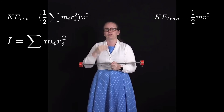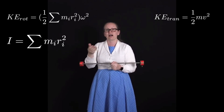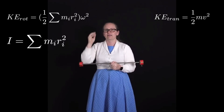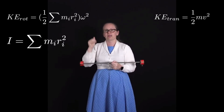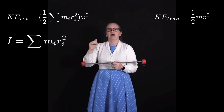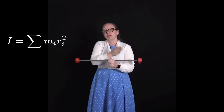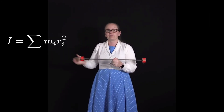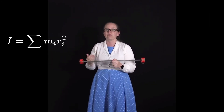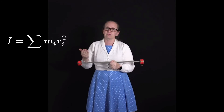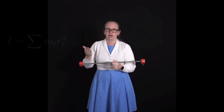That sum is in fact our moment of inertia. So the moment of inertia I equals the sum of mᵢ rᵢ² summed over all the little masses involved. That's what the moment of inertia is.